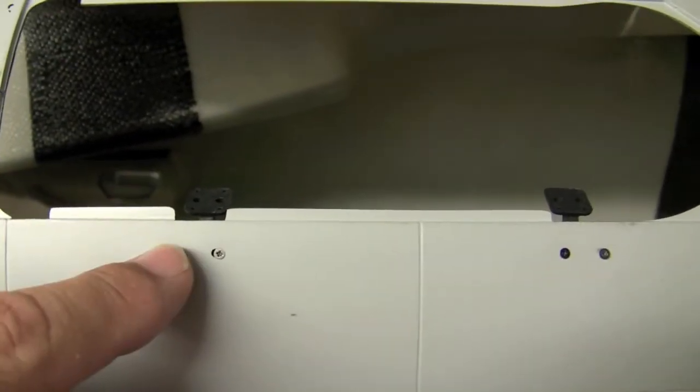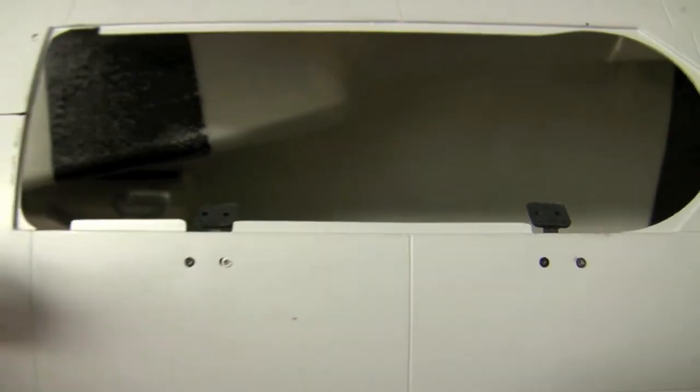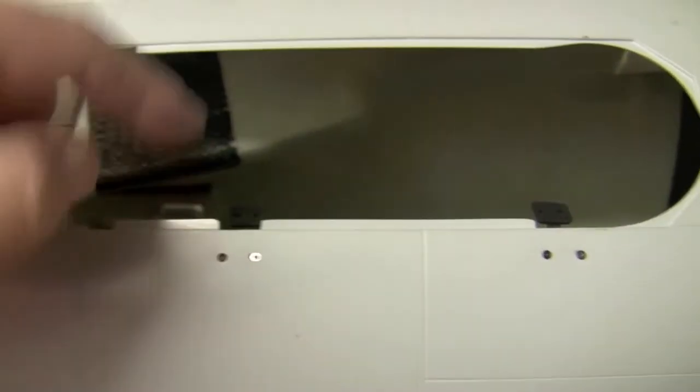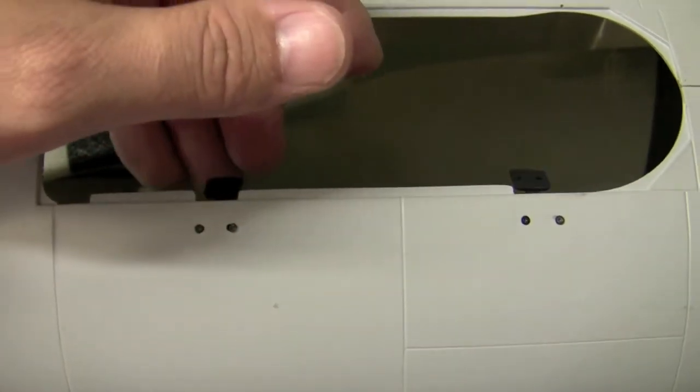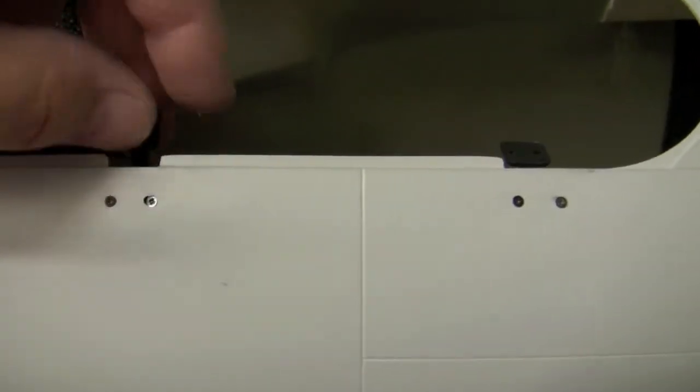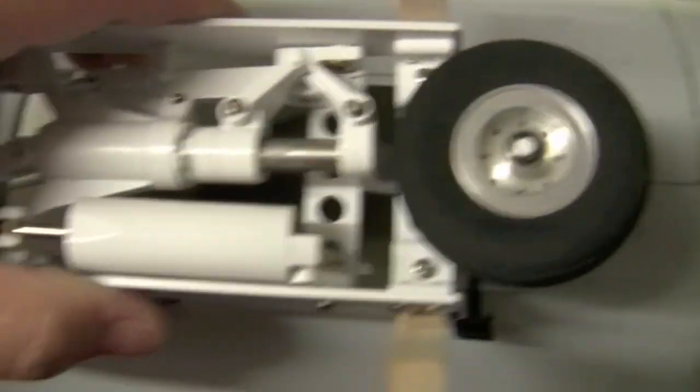And then you just take the screws that are provided and you go from the outside of the fuselage in. I've seen on one of the forums where somebody was trying to screw it from the inside out, but you won't get any grip there. So you want to make sure that these open up. You want a hundred degrees of movement, so it looks like we're plenty good there.